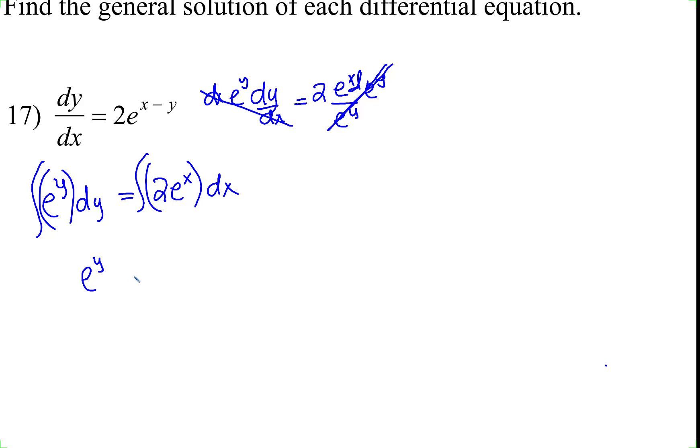So if we bring that 2 on the outside, that becomes 2 times the integral of e^x dx. The integral of e^x is just e^x, so 2e^x, and now we can put plus capital C.